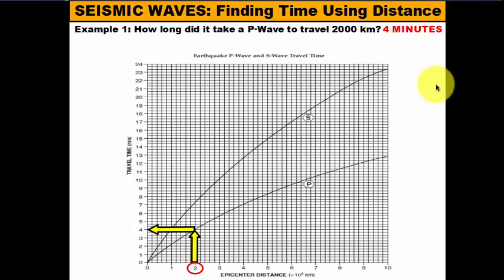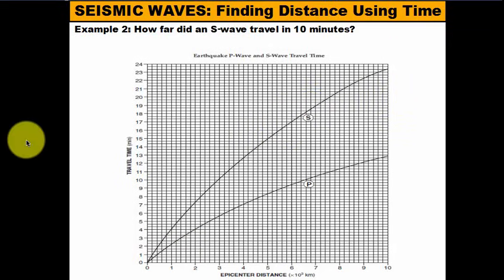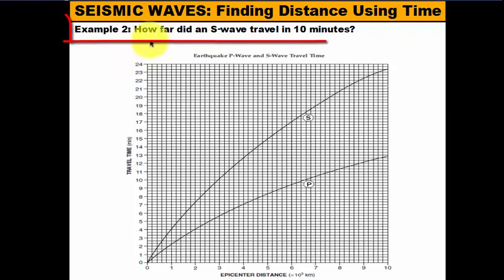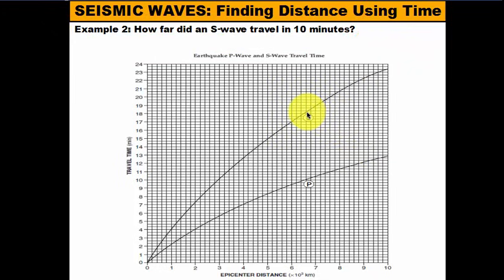So your answer is 4 minutes — pretty simple. Go ahead and pause this video to answer the questions on your work packet, and tune back in when you're ready. Now we're going to do the opposite: find the distance a wave traveled given the time. This example asks: how far did an S-wave travel in 10 minutes? So instead of using the P-wave curve, I'm going to use the S-wave curve.